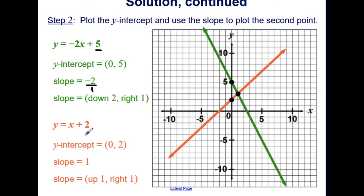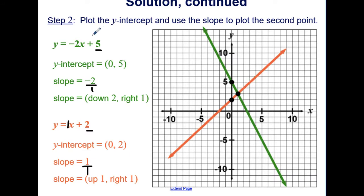The next equation, y equals x plus 2, has a y-intercept of (0, 2) because our constant is 2. The slope is 1 — technically the coefficient — so 1 over 1, which is up 1 and right 1. That's the orange line, with a y-intercept of 2, going up 1 and right 1.